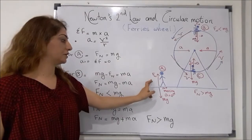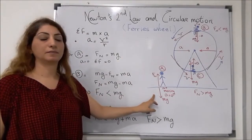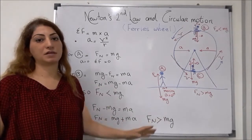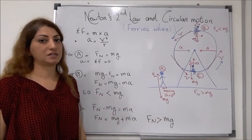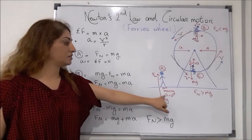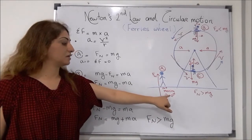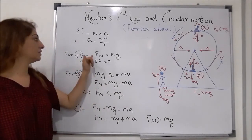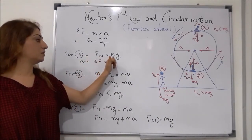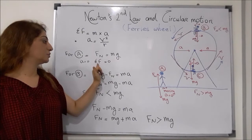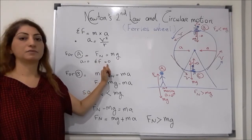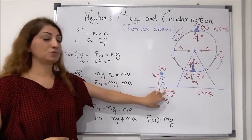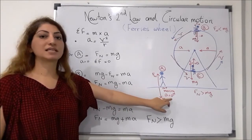Person A is standing on the floor and is not moving. Since the velocity is zero, the acceleration is also zero. This means the sum of the forces acting on this person must also equal zero.